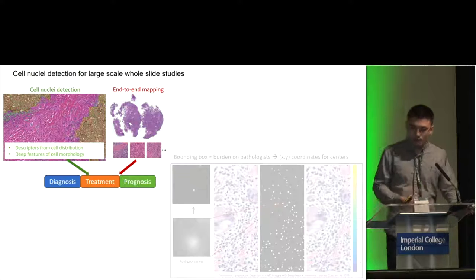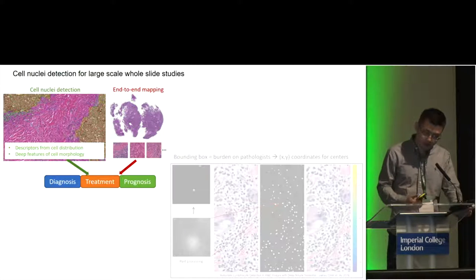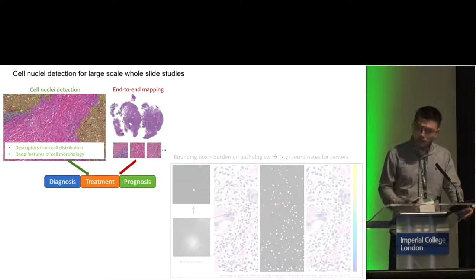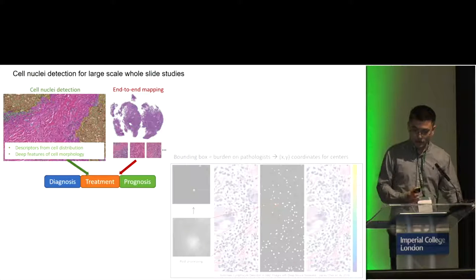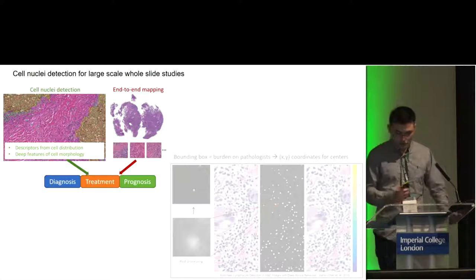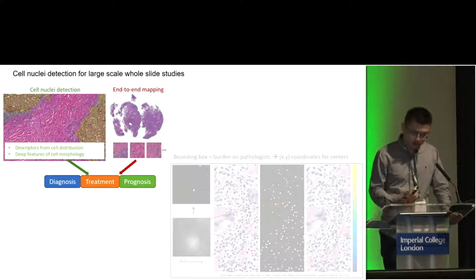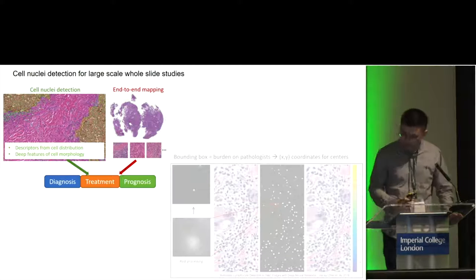But if we do cell detection, we can use the features learned by solving this task, or we can directly use the coordinates — which are the output of the detection algorithm — so that we can get engineered descriptors which are more interpretable and solve the downstream applications. That's another approach.